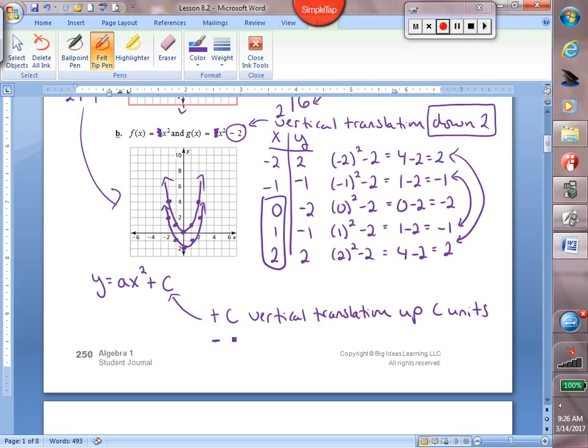Now, if we happen to subtract, we still had a vertical translation, but we went down, and again, we're just going to say C units. And C again is just whatever that number happens to be that we are adding or subtracting. Whatever that number happens to be is how many units we move up or down on our graph.